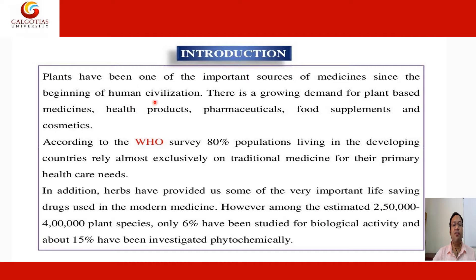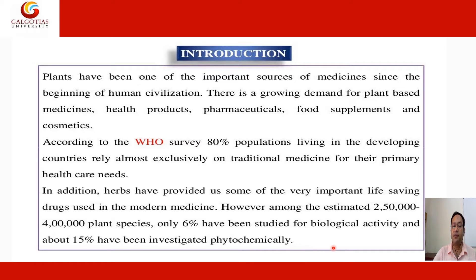Introduction: Plants have been one of the most important sources of medicine since the beginning of human civilization. There is a growing demand for plant-based medicine, health products, pharmaceuticals, food supplements, and cosmetics. According to World Health Organization survey, 80% of the population living in developing countries rely almost exclusively on traditional medicine for their primary health care needs. Herbs have also provided some very important life-saving drugs used in modern medicine. However, among the estimated 250,000 to 400,000 plant species, only 6% have been studied for biological activity and about 15% have been studied phytochemically.